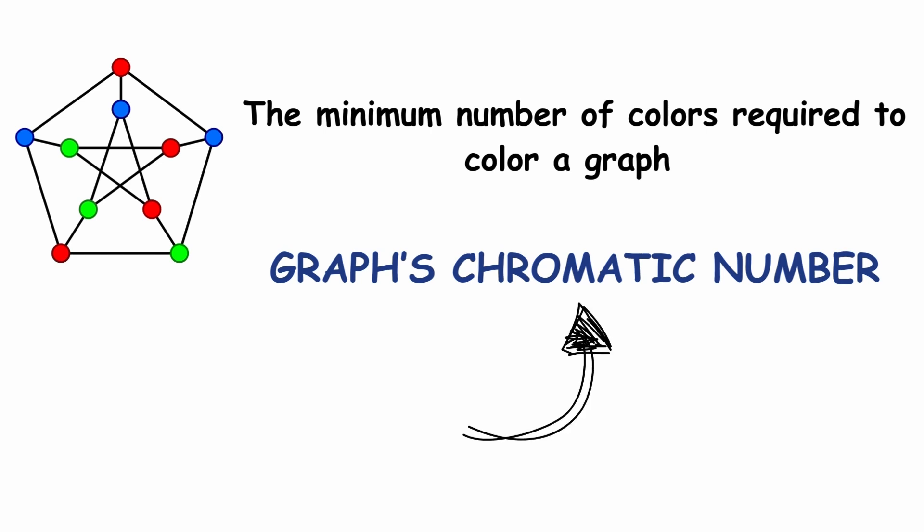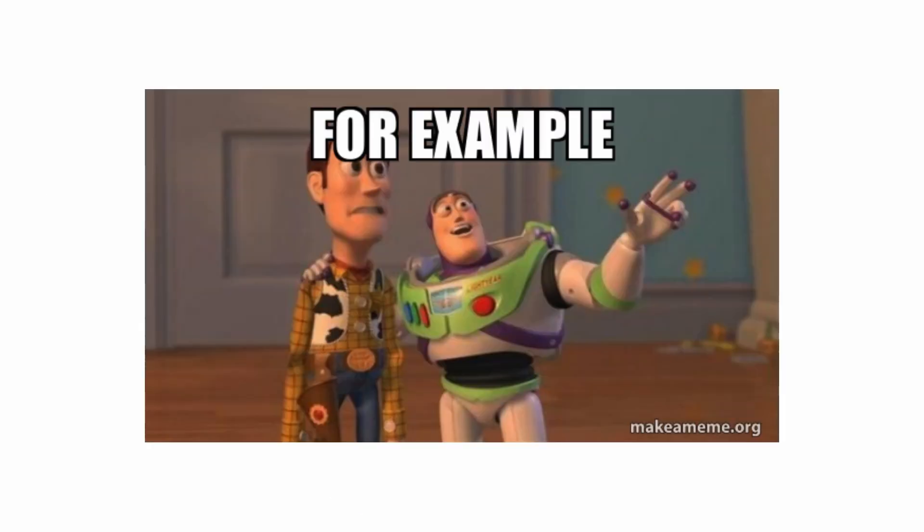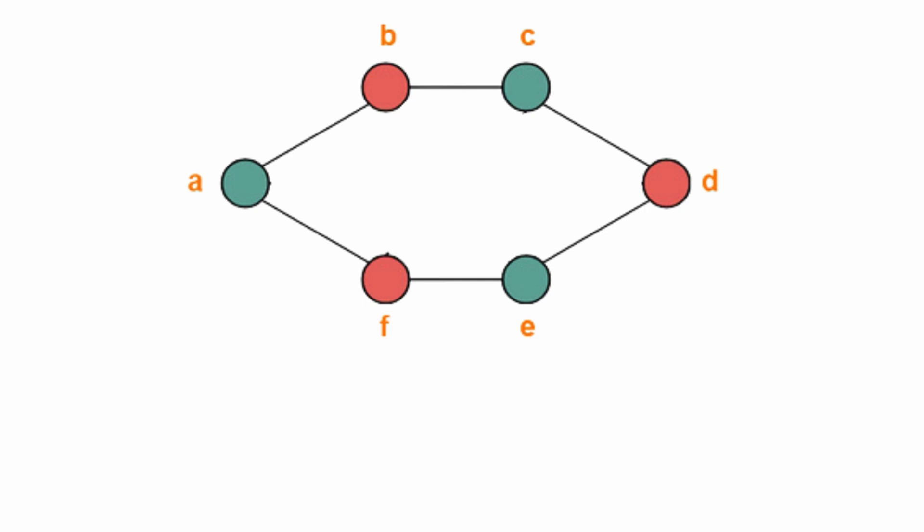Here, the word chromatic means relating to color. For example, the chromatic number of a hexagonal graph is 2.